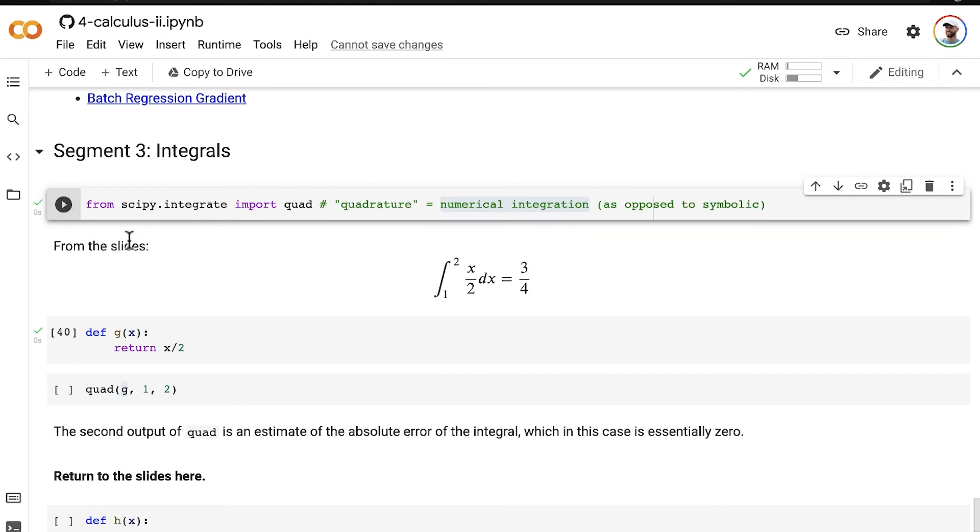And then we pass that function as the first argument into this quad method. We're going to need to import that, aren't we? So g is the first argument,